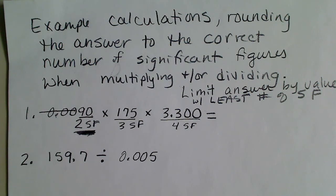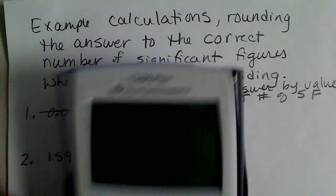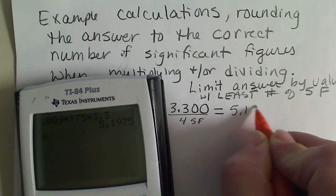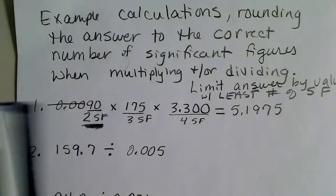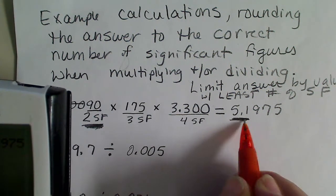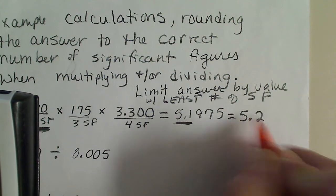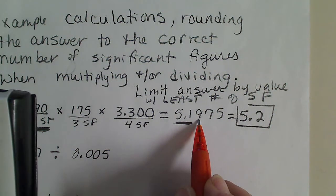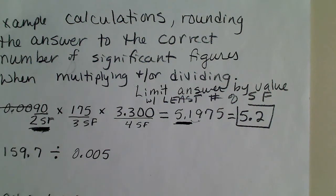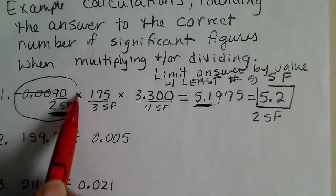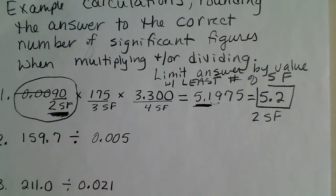If we plug those values into the calculator — 0.009 times 175 times 3.3 — we'll get 5.1975. Since we need to limit our answer to two significant figures, those are the two placeholders we need. We round this correctly to 5.2, because this 9 being greater than 5 causes that value to be rounded up. Our answer can only have two significant figures because our limiting value only had two significant figures.